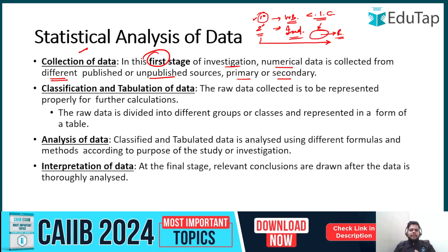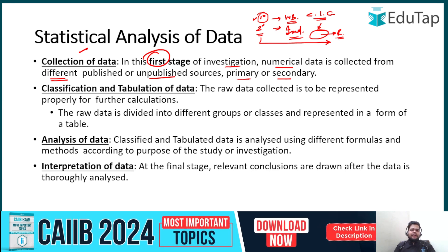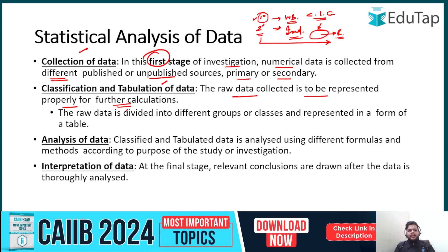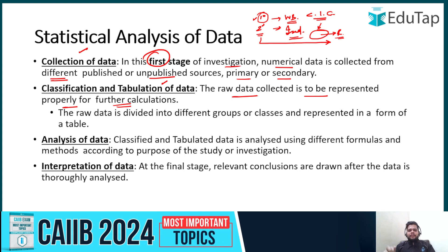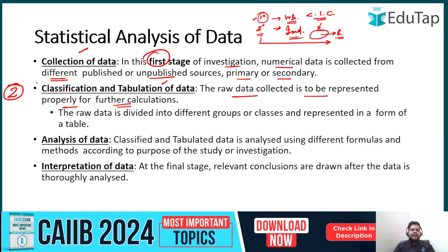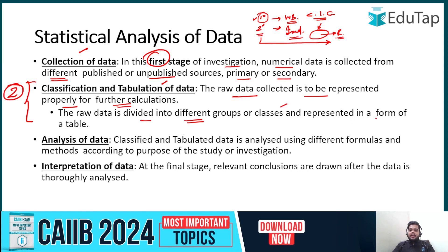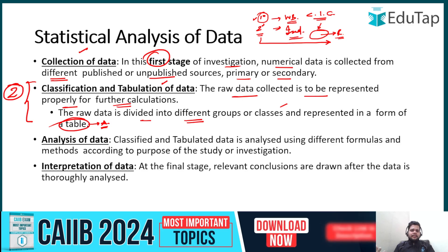These small distinctions will help you in the exam and also in your banking career, where data structuring happens through MIS with year-on-year data. Once you have collected the data, classification and tabulation comes next: raw data is divided into different groups or classes and represented in the form of a table — mostly a table, but it can also be a pie chart, bar graph, or various other types of classification.